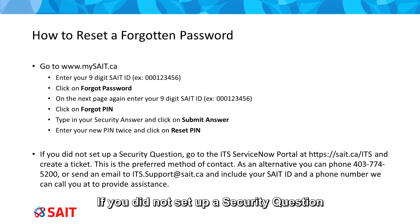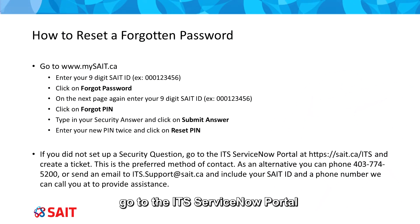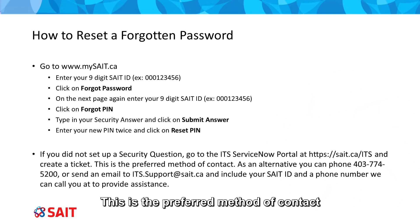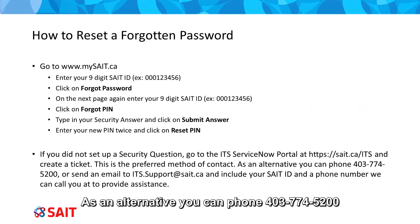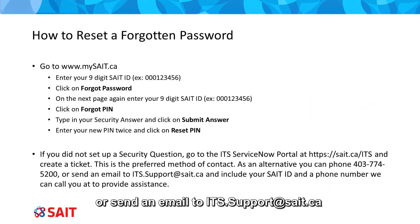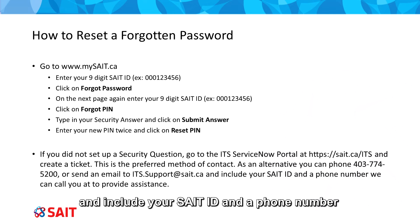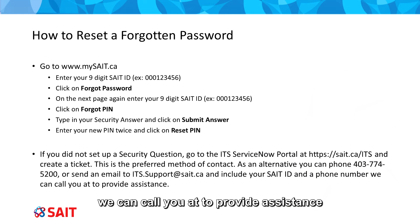If you did not set up a security question, go to the ITS ServiceNow portal at sait.ca/ITS and create a ticket. This is the preferred method of contact. As an alternative, you can phone 403-774-5200, or send an email to ITS.support@sait.ca, and include your SAIT ID and a phone number we can call you at to provide assistance.